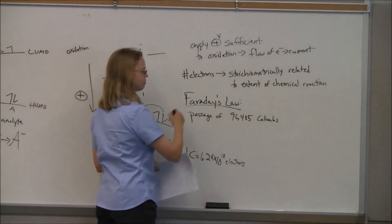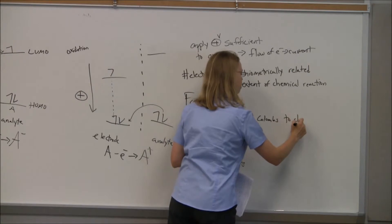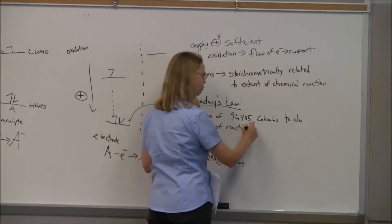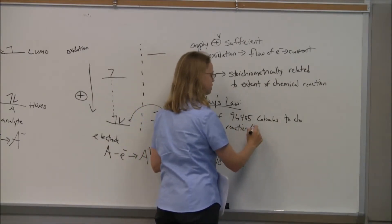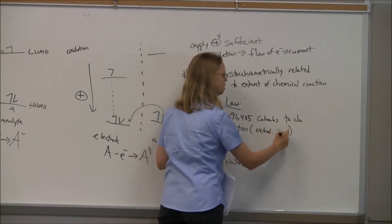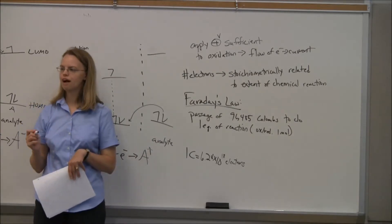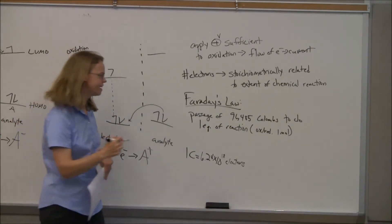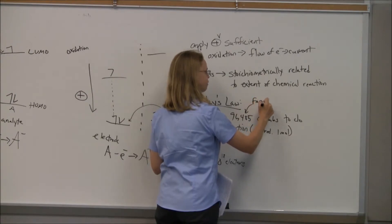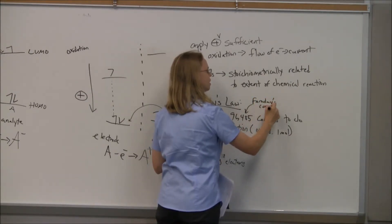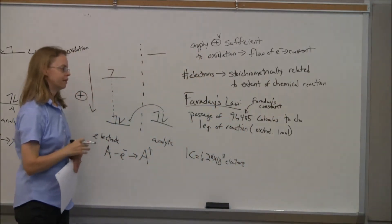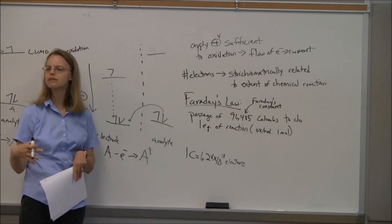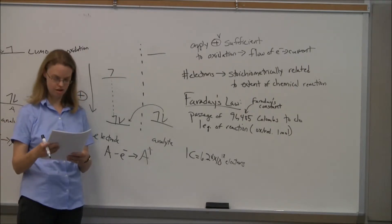A coulomb is just an amount of electrons. But 96,485 coulombs to do one equivalent of a reaction. So that means to oxidize something with one electron, one mole, basically, that's the amount of coulombs you need to oxidize or reduce one mole of something. Well that 96,485 should hopefully look familiar. That ends up being Faraday's constant.